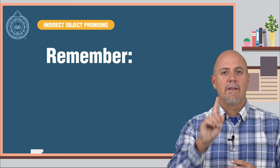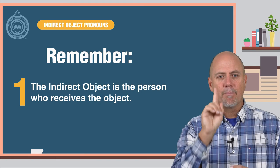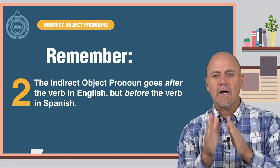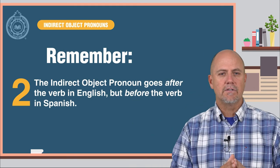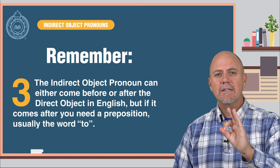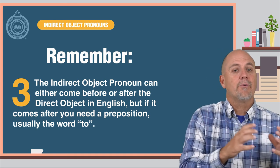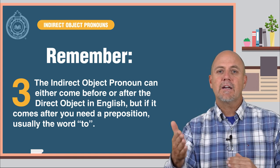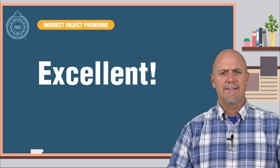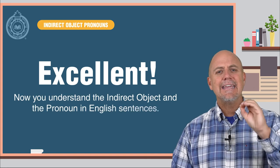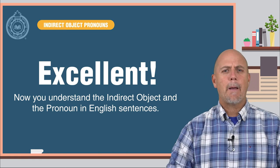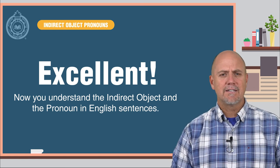Remember: number one, the indirect object is the person who receives the object. Number two, the indirect object pronoun goes after the verb in English, but before the verb in Spanish. And number three, the indirect object can either come before or after the direct object in English, but if it comes after, you need a preposition — usually the word 'to.' Excellent. Now you understand the indirect object and the pronoun in English sentences. I will see you back here again for the next lesson. Good luck.